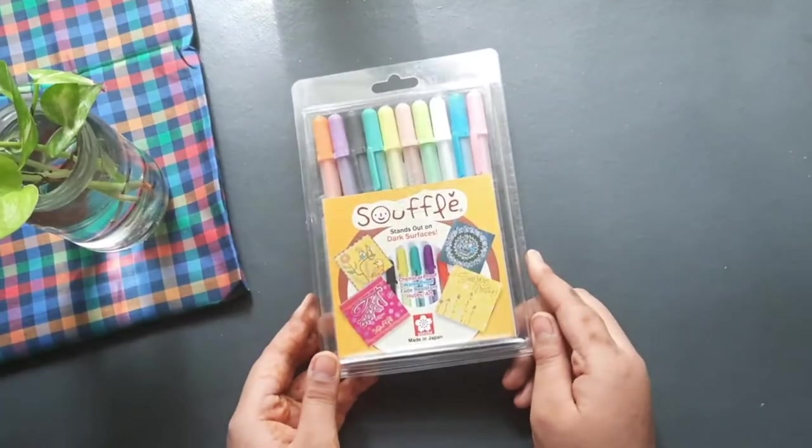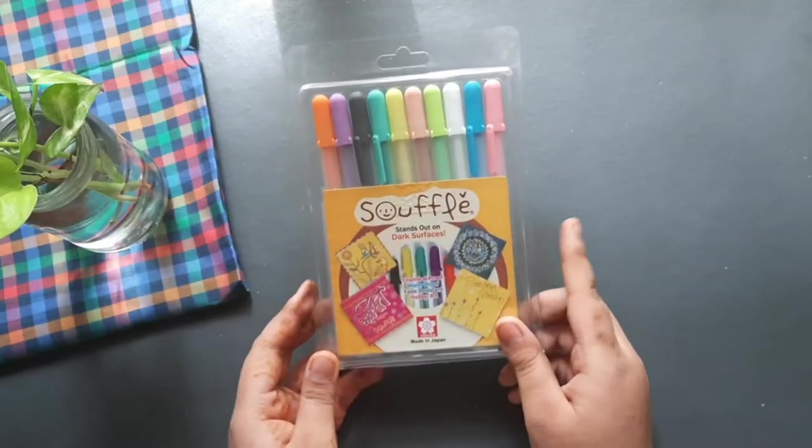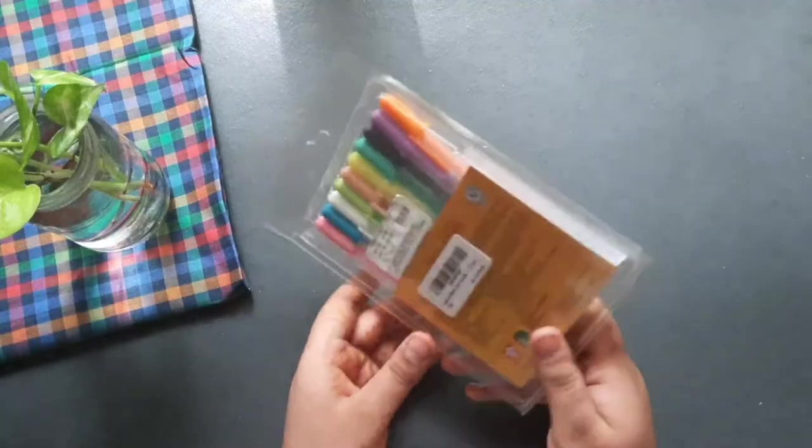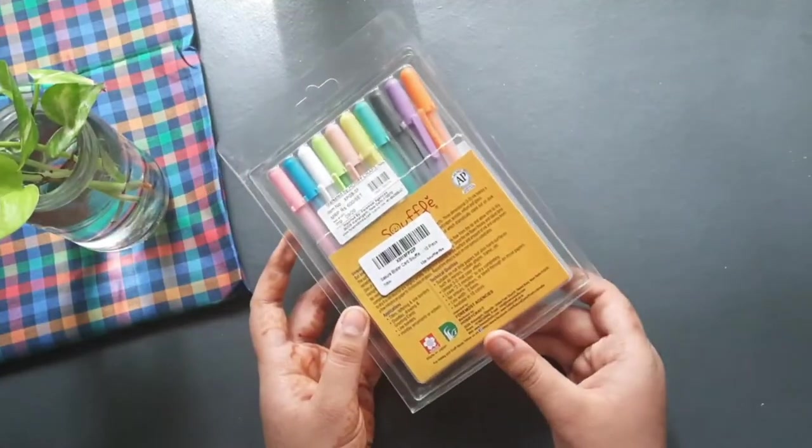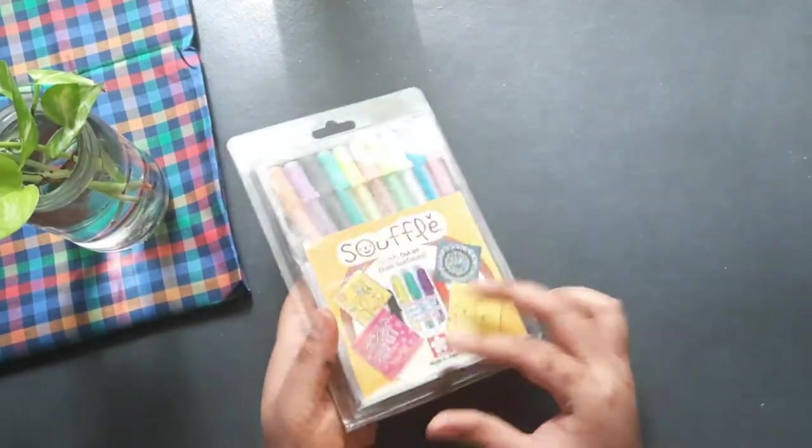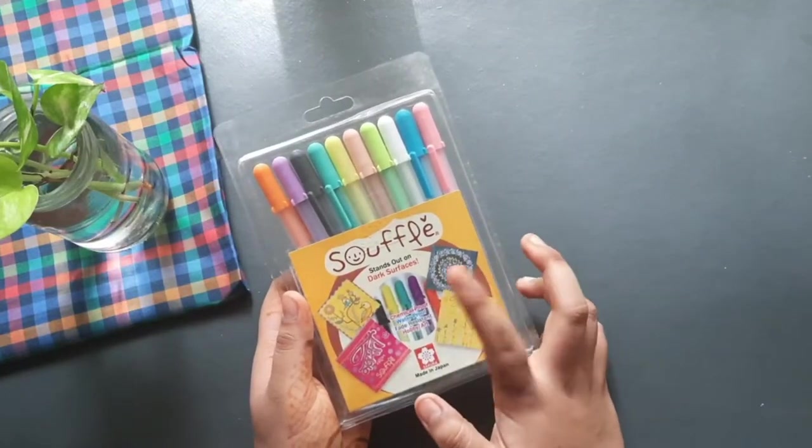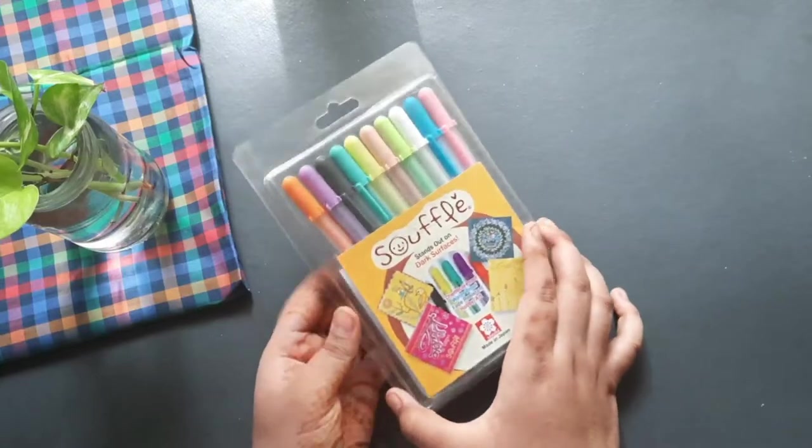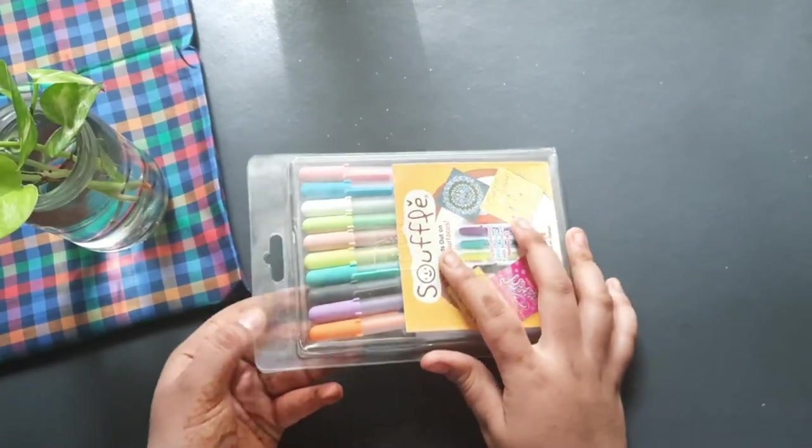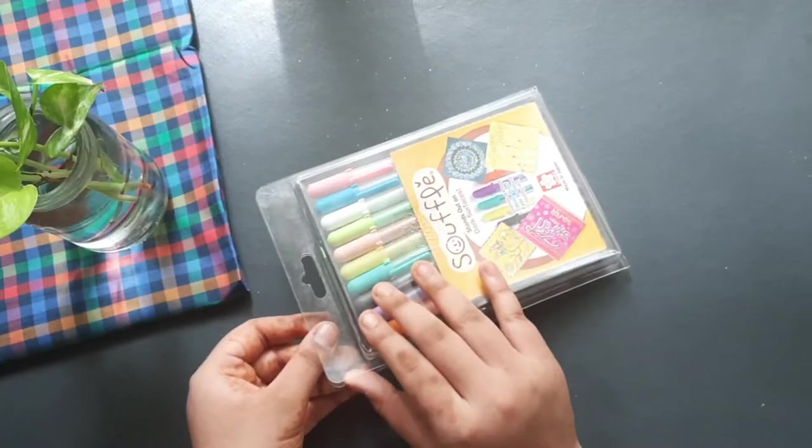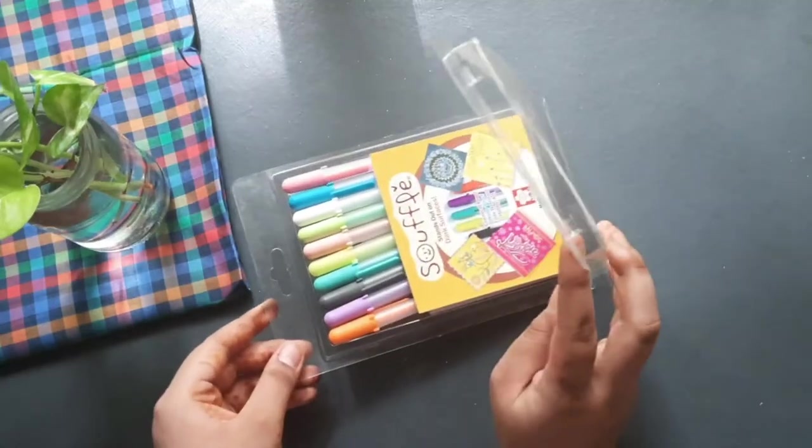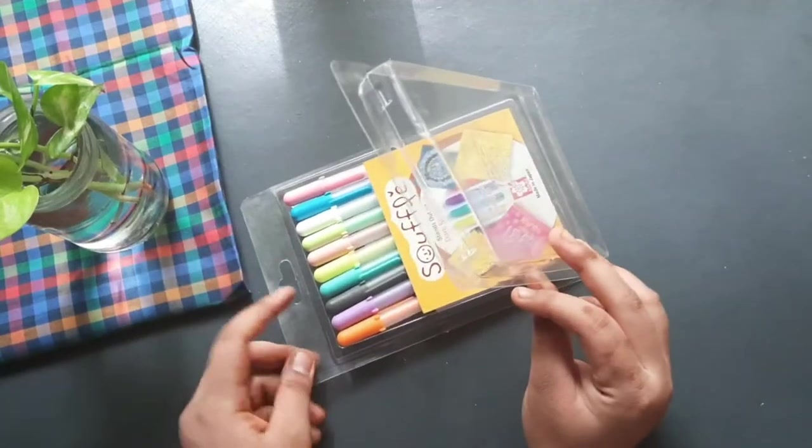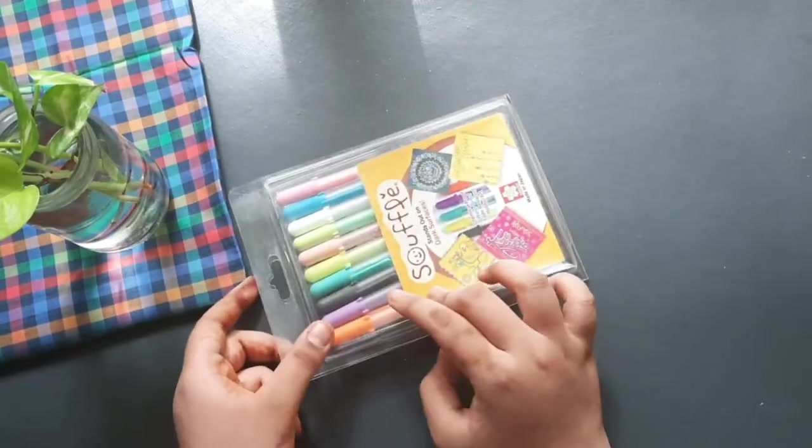So while talking about the packaging, it looks actually good. It has a plastic packaging and it also says that it stands out on dark surfaces so we are gonna try this out soon. There are also some instructions and some general stuff about this pen written in the back side. While opening it, it has a hinge sort of thing so after usage you can place your pens in it and close it. So I'm quite happy with how the packaging is.